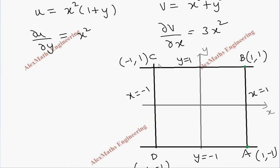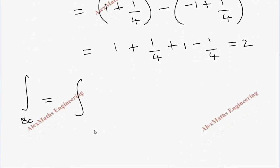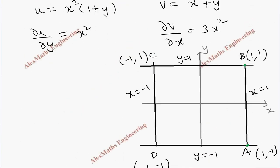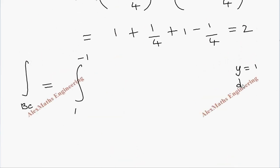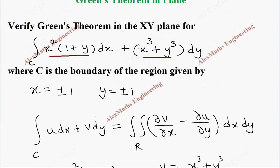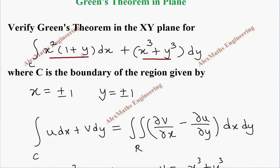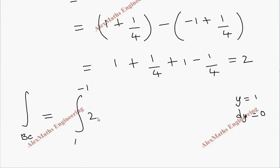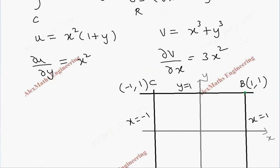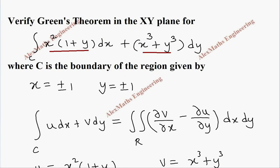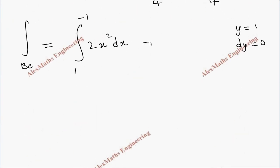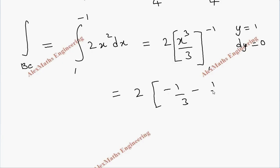For path BC, x varies from 1 to −1 and the equation is y = 1, so dy = 0. The second term vanishes. With y = 1, the integrand becomes 2x² dx. Integrating gives [2x³/3] from 1 to −1, which is 2(−1/3) − 2(1/3) = −4/3.